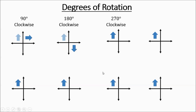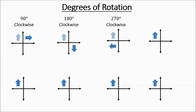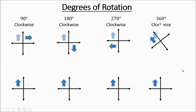270 clockwise, 270 degrees — it was pointing up, then it was pointing to the left. For a 360 degree clockwise spin, it's back where it was originally.